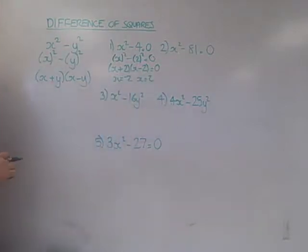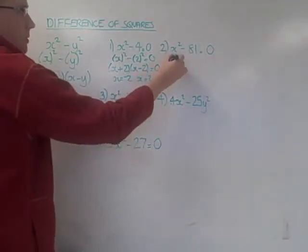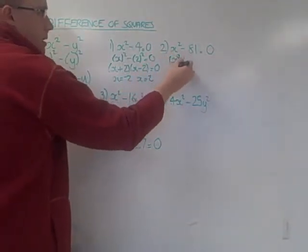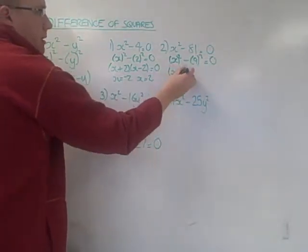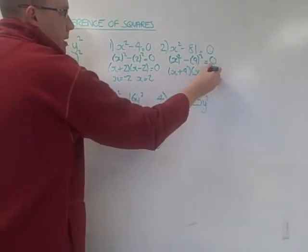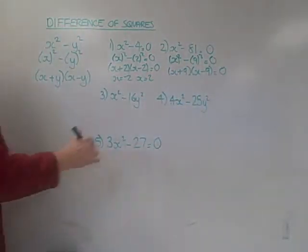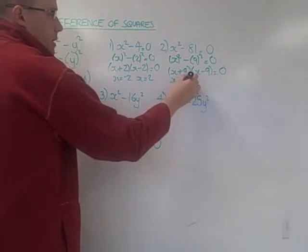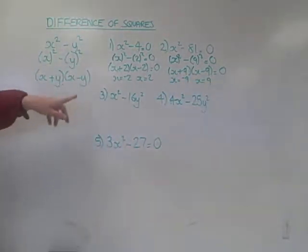Number 2: x² - 81. Well, that's x² - 9², so I can write this as (x + 9)(x - 9). And when I want to find the values that make it equal to 0, just choose the opposite again, so -9 and +9.